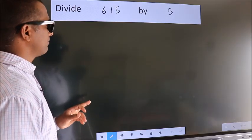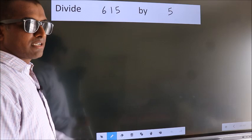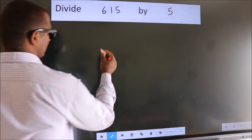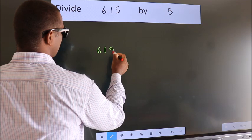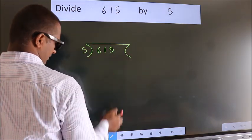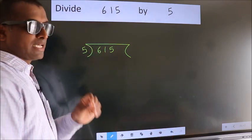Divide 615 by 5. To do this division we should frame it in this way. 615 here, 5 here. This is your step 1.